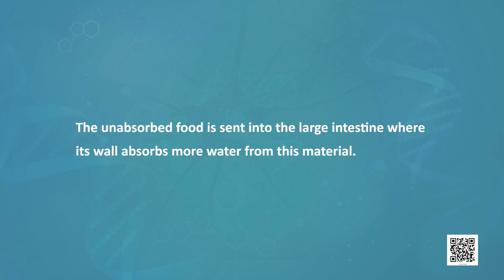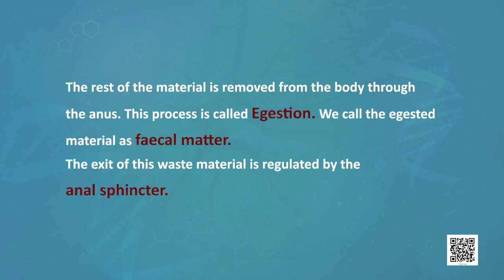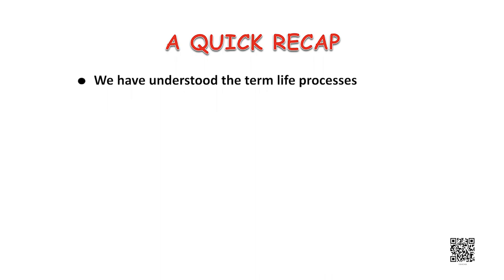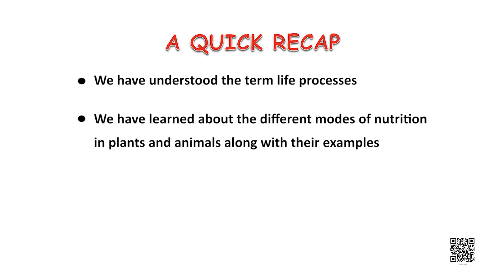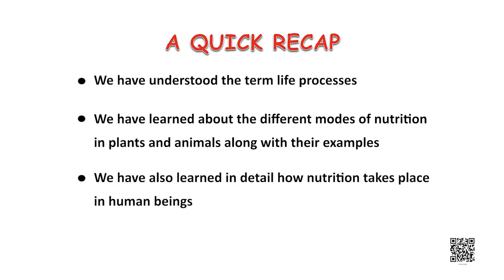The unabsorbed food is sent into the large intestine where its wall absorbs more water from this material. The rest of the material is removed from the body through the anus — a process called ejection. We call the ejected material fecal matter. The exit of this waste material is regulated by the anal sphincter. This is how nutrition takes place in human beings.